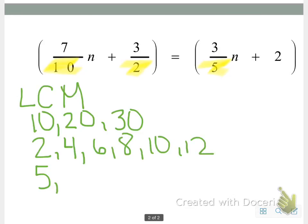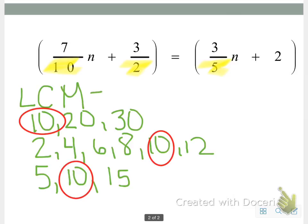We're also going to do this for 5. 5 times 1 is 5, 5 times 2 is 10, 5 times 3 is 15. As you can see here, we have a 10, a 10, and another 10, all in common, which would mean that our lowest common multiple is equal to 10.